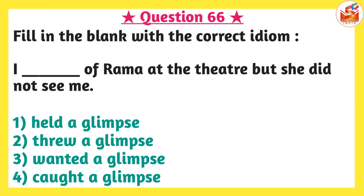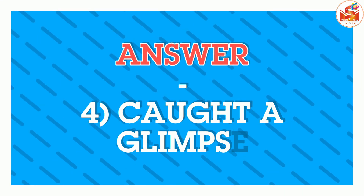Next question: fill in the blank with the correct idiom. 'I blank space of Rama at the theater but she did not see me.' Options are: option one, held a glimpse; option two, threw a glimpse; option three, wanted a glimpse; option four, caught a glimpse. Here 'glimpse' means a quick look or a fleeting view — 'jalak' in Hindi. The correct idiomatic phrase used with glimpse is 'caught a glimpse.' 'Held a glimpse,' 'threw a glimpse,' and 'wanted a glimpse' are not idiomatic. The most suitable option is option four — caught a glimpse.